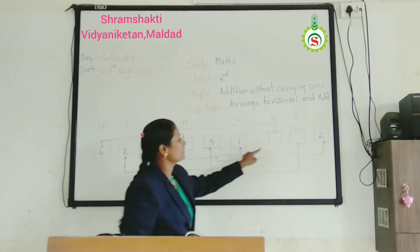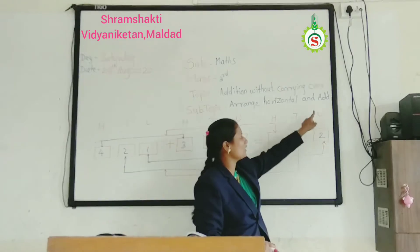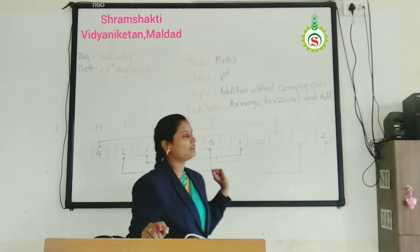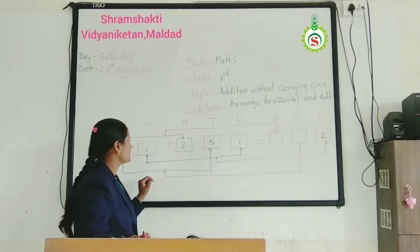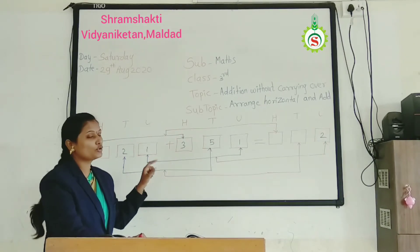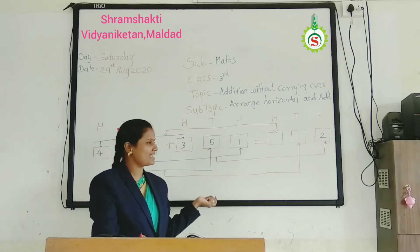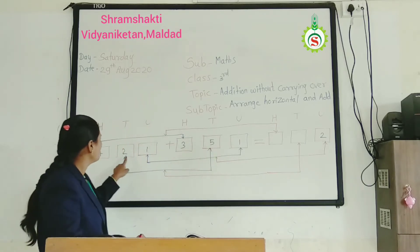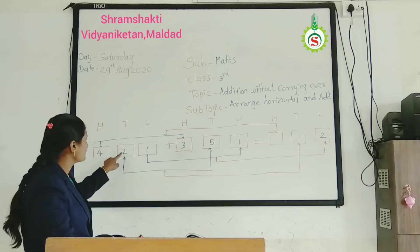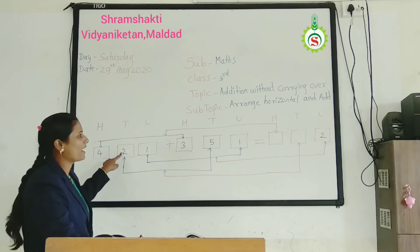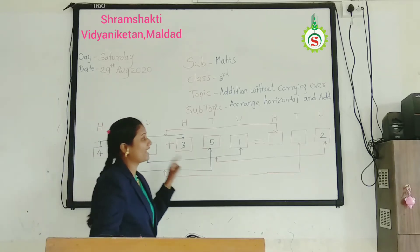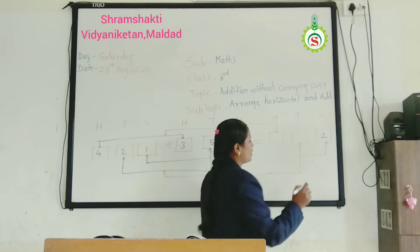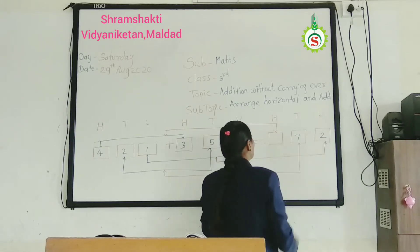1 add 1 is 2. Write down at unit place in horizontal arrangement. Then you see next, which place? Tens place. 5 plus 2 is 7. Write down at tens column: 7.